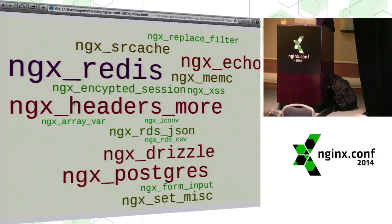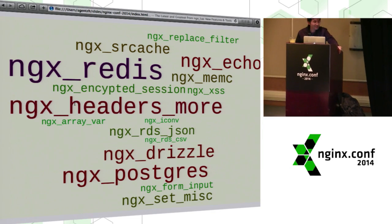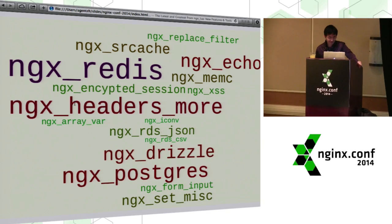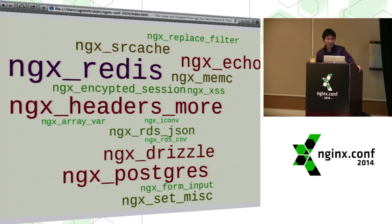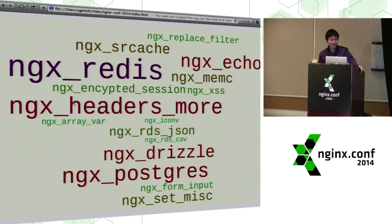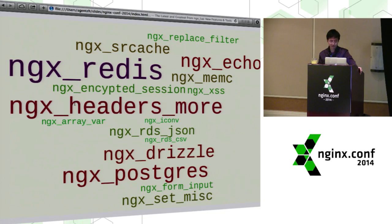But when the business logic becomes more and more complicated, our NGX configuration file becomes more and more convoluted, and it's harder and harder to maintain. And especially, we are tired of writing more and more NGX C modules, because C programming is hard. And we want to avoid it whenever possible.